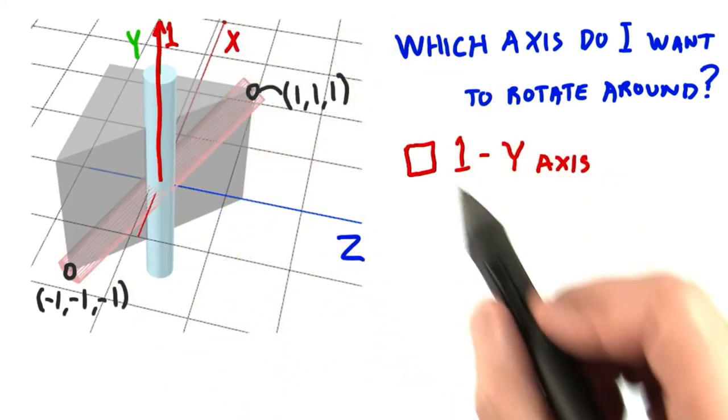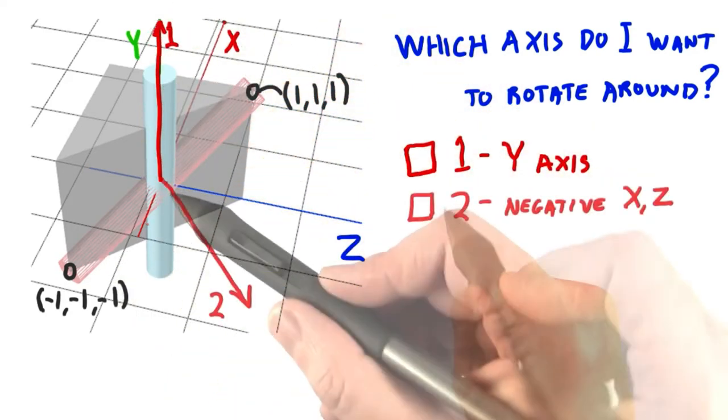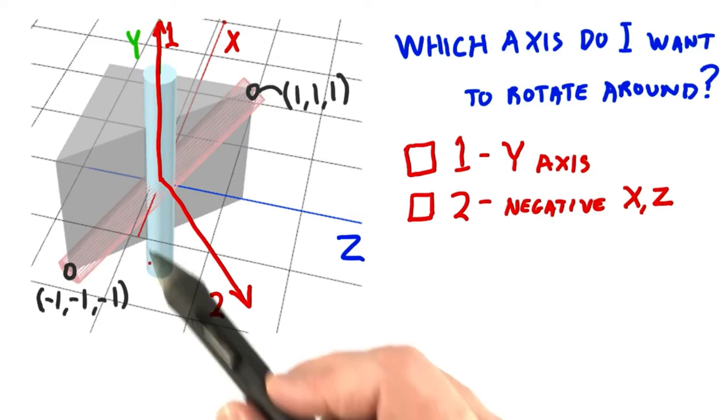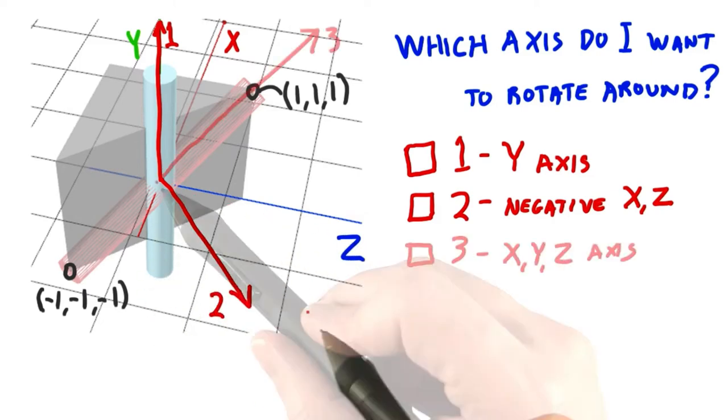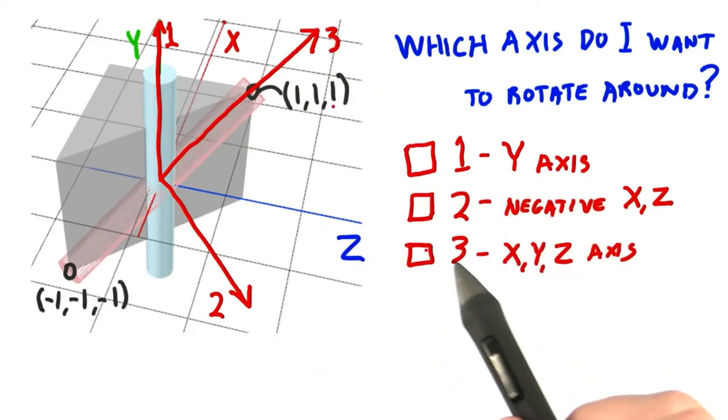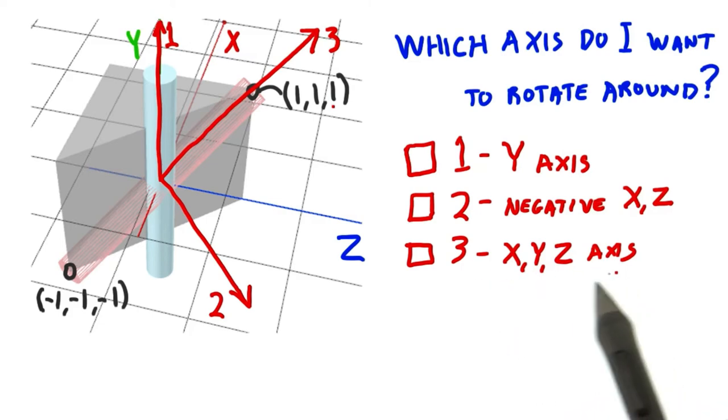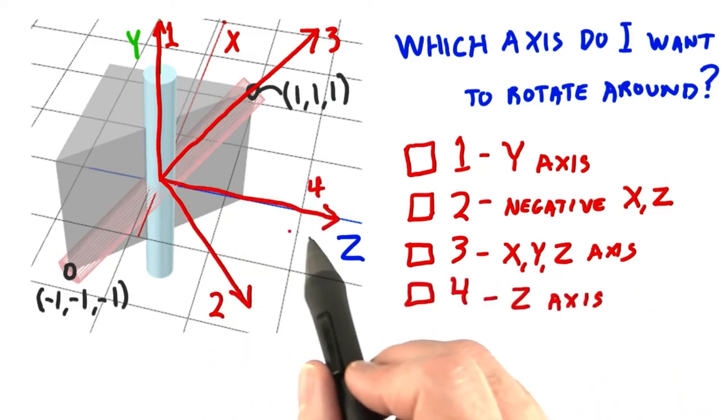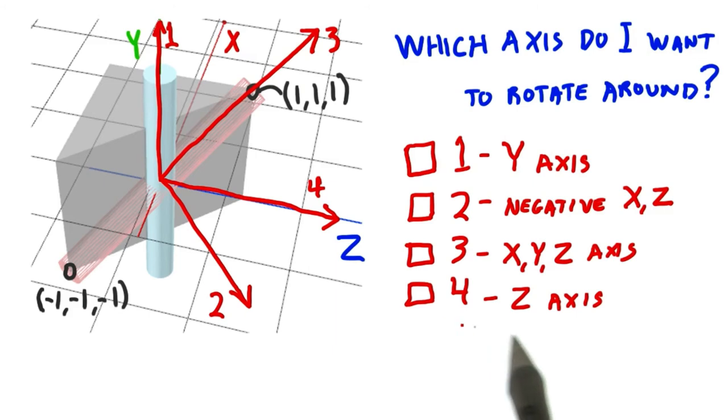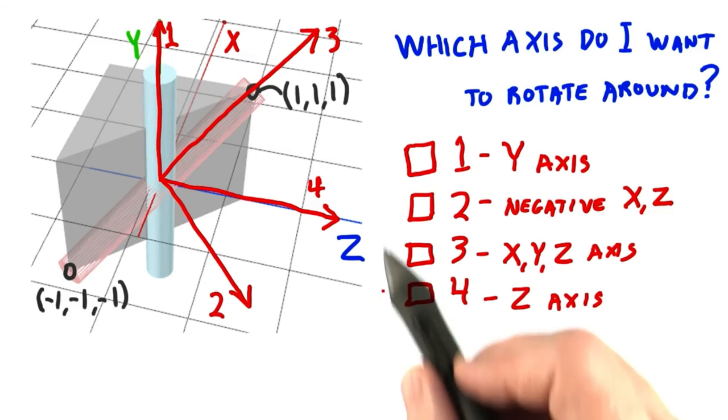Your choices are axis 1, which is along the y-axis. Axis 2, which goes along negative x and z. Axis 3, which goes along this x, y, z axis itself. And your last choice is axis 4, which goes along the z axis. Mark each that is correct, if any.